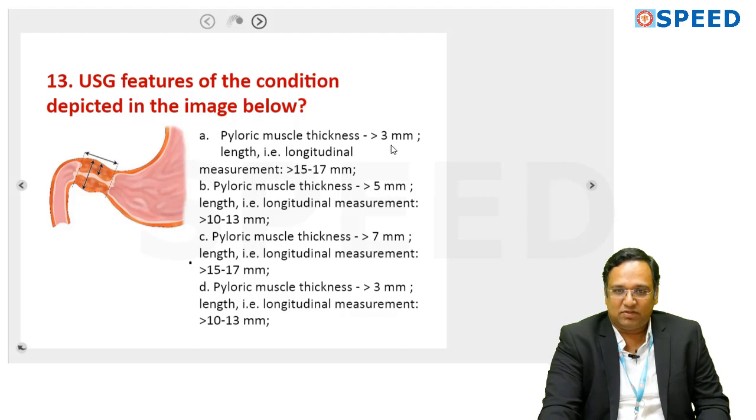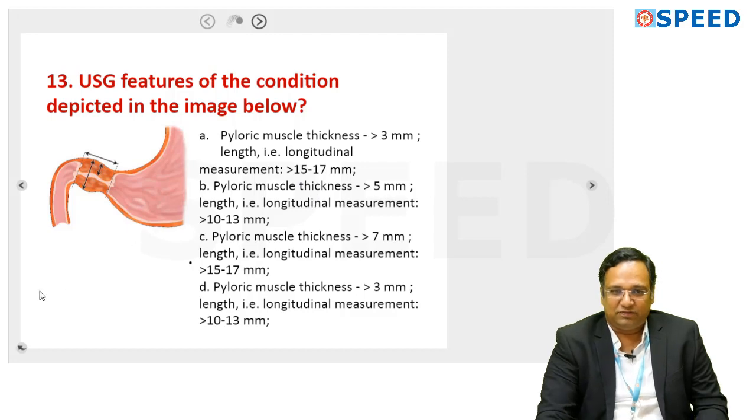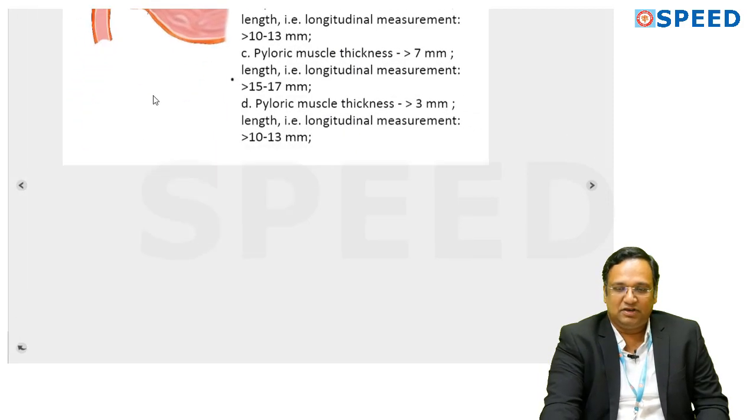Pyloric muscle thickness more than 3 mm and length, longitudinal measurement 15 to 17 mm. I will tell you first before going into the question, then you will have a clear idea.